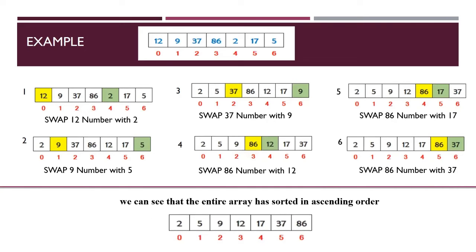Now we can see that the entire array has been sorted in ascending order: 2, 5, 9, 12, 17, 37, and 86. At the beginning of the selection sort process the list is in unsorted format, where we use a sorted sublist and unsorted sublist, but at the end of the selection sort technique the entire array has been sorted.